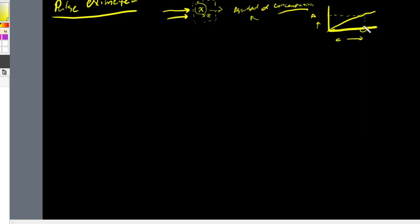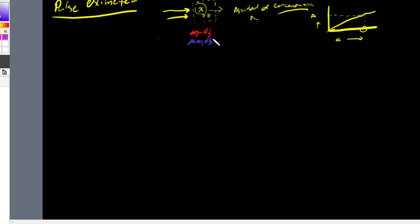Our pulse oximeter works on basically the same principle. It detects the amount of oxyhemoglobin — hemoglobin attached to oxygen — and compares it with our deoxyhemoglobin, the amount of hemoglobin that is unbound to oxygen. It shoots light through both of these substances at differing wavelengths, and based on the absorbance of light, it can determine a concentration and therefore an oxygen saturation.